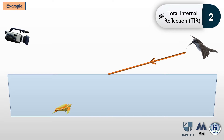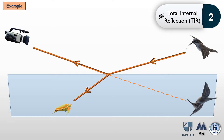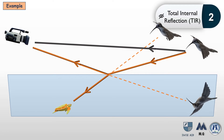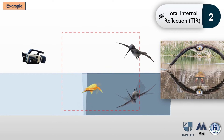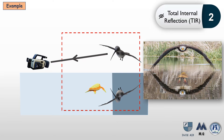Let's look at a combined example. A light ray from a bird in air hits the water surface — since it's in the lower density medium, only PIR occurs. The ray reaches the camera, and the remaining part refracts to reach the turtle. From the camera's viewpoint: the bird appears directly, its virtual image appears reflected on the water surface, and the turtle's virtual image appears as a refraction from below.